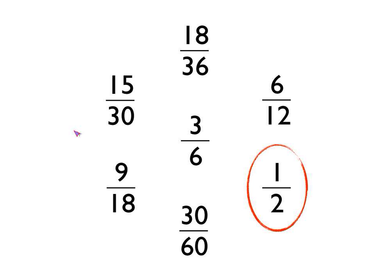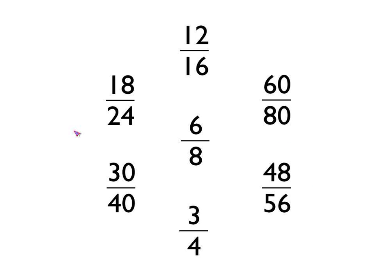Let's have a look at another one. Here are some more fractions that are all equivalent to 6 eighths — so 60 eightieths, 12 sixteenths. All these fractions are equivalent to 6 eighths, but only one of them is the fraction in its simplest form. It's this one: 3 quarters.